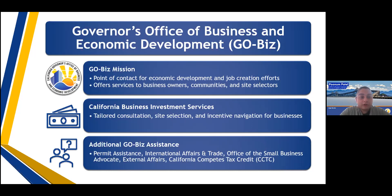The unit I specifically work for is the California Business Investment Services team. We specifically help with tailored site selection for companies — working with our local and regional economic development partners across the state to help companies find a site in California. We also provide incentive navigation for businesses, with specialists who can walk companies through the array of resources and programs available to help them be successful here in California.